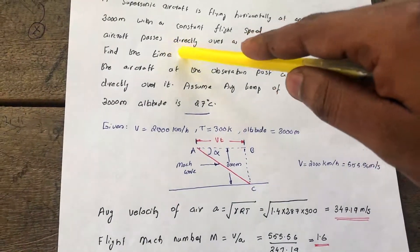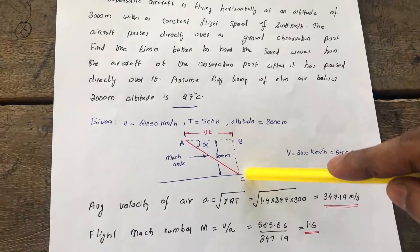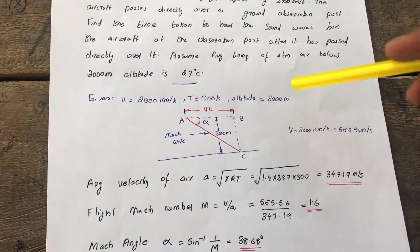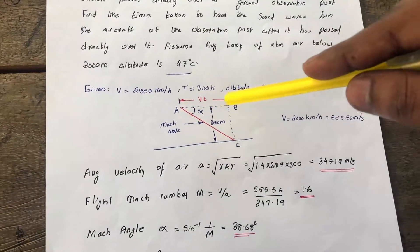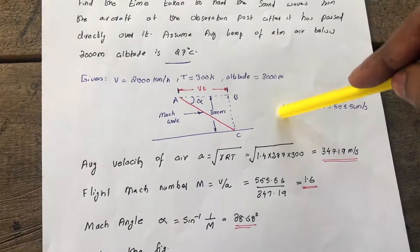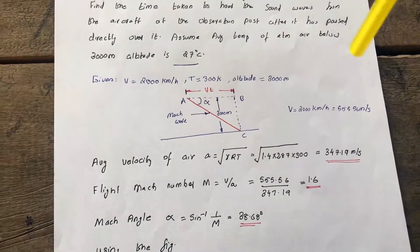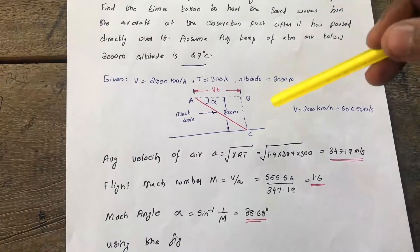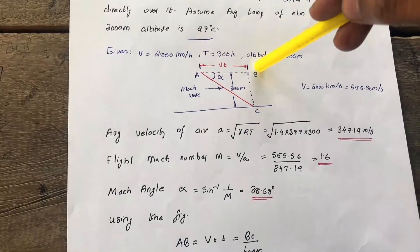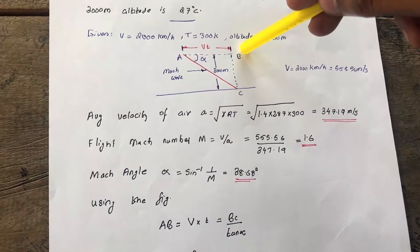The aircraft passes directly over a ground observer post. Since it is a supersonic flight, the body travels first and the sound is traveling backwards to the body. Even though the body passes, the sound is behind the body. As the body is here, the sound only reaches here.